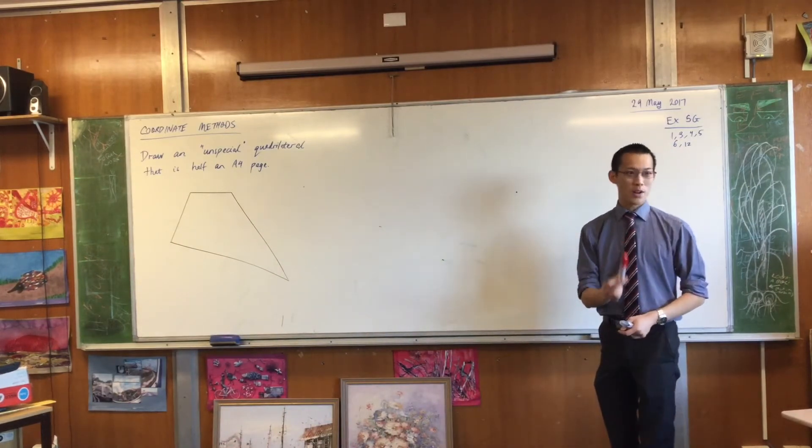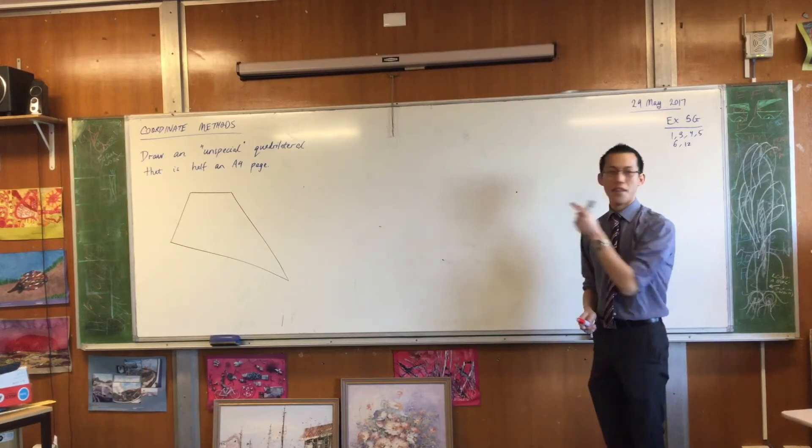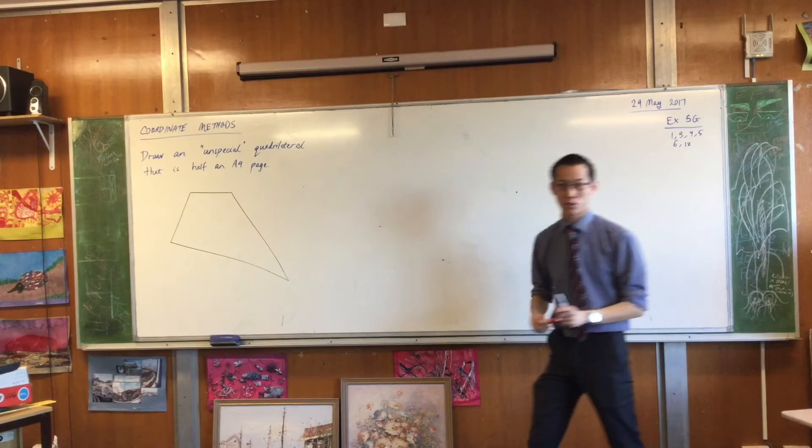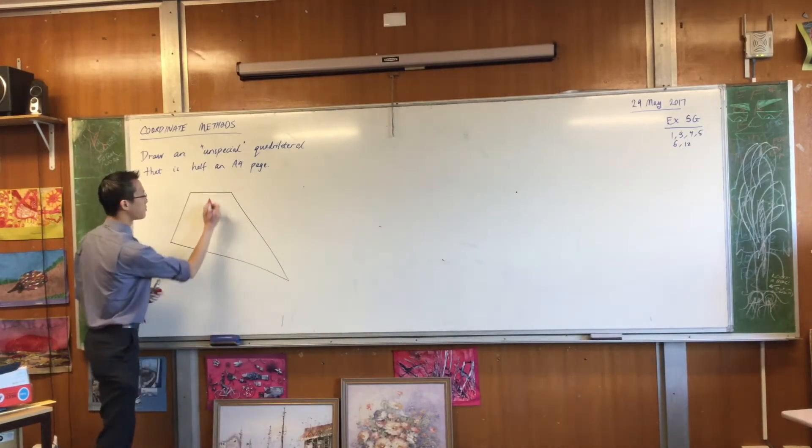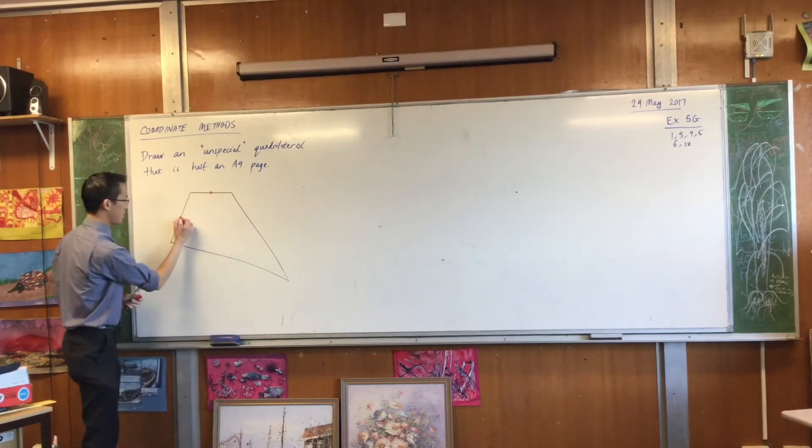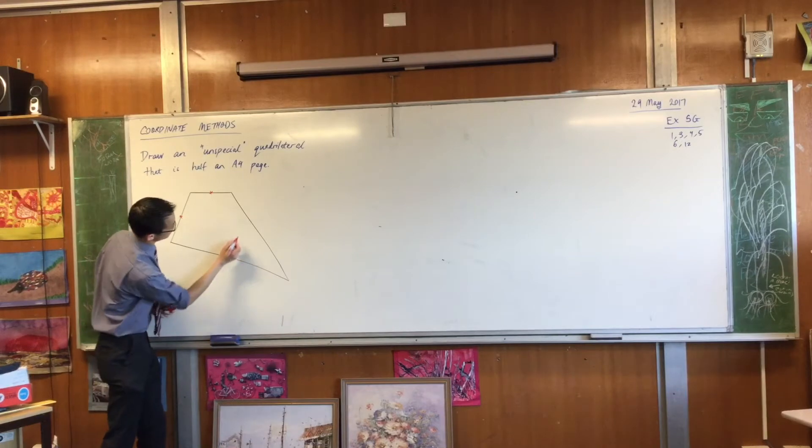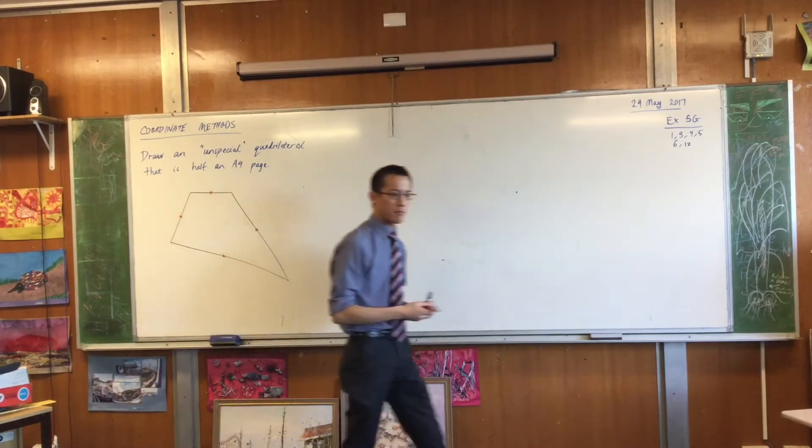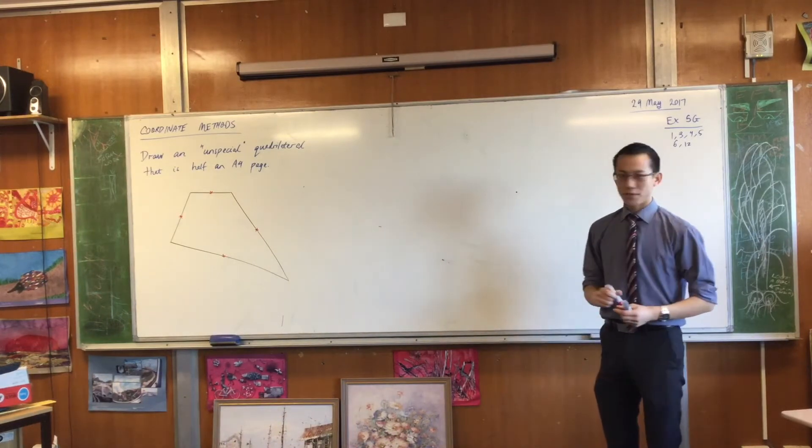With a ruler what I want you to do is to locate and then mark out the midpoint of each one of the four sides of your unspecial quadrilateral. Measure it out, make it as accurate as possible. Mark out all those midpoints, and once you have them marked out, measure it carefully.